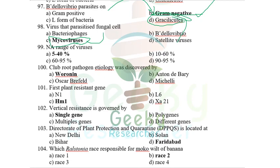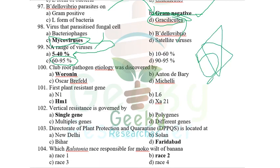The nucleic acid range of viruses: almost all viruses range from 5 to 40% nucleic acid and 60 to 95% protein coat. In TMV specifically: 5% nucleic acid, 95% protein coat. Generally the nucleic acid range is 5 to 40%. They asked for nucleic acid range — the answer is 5 to 40%.